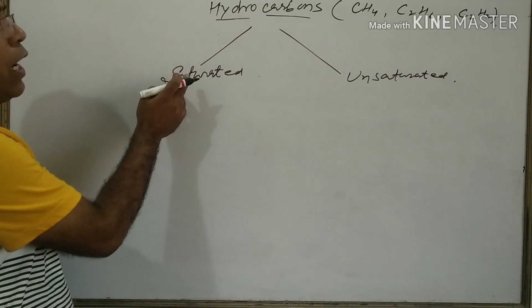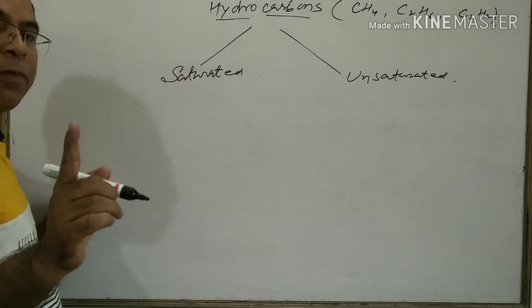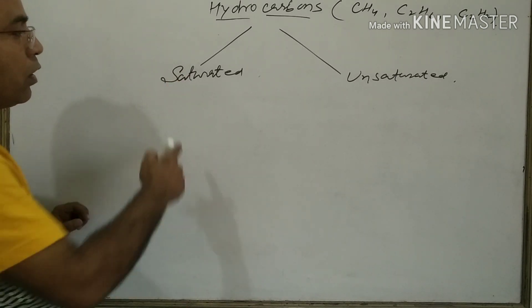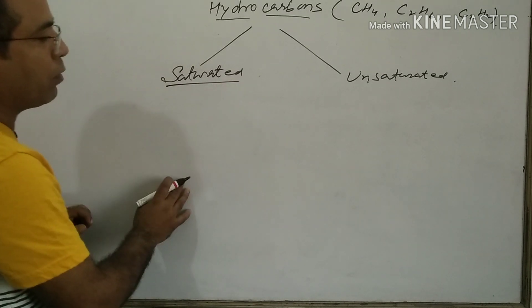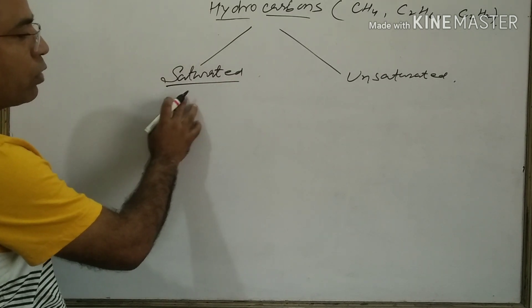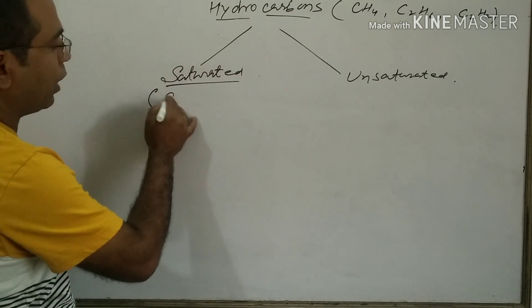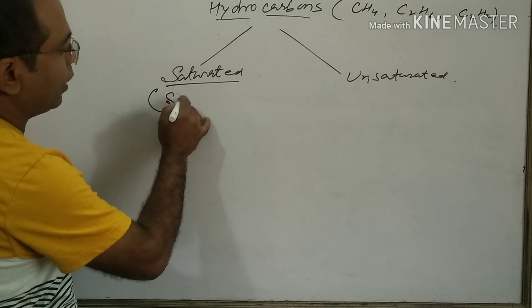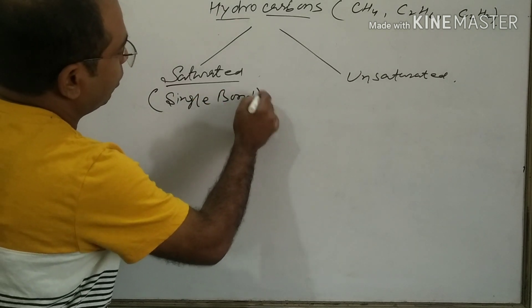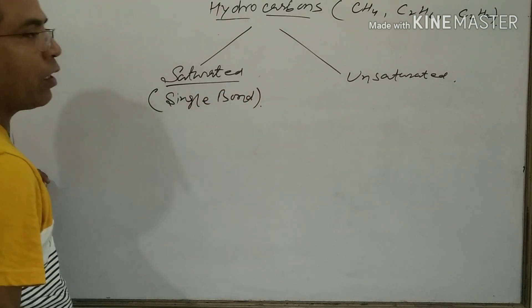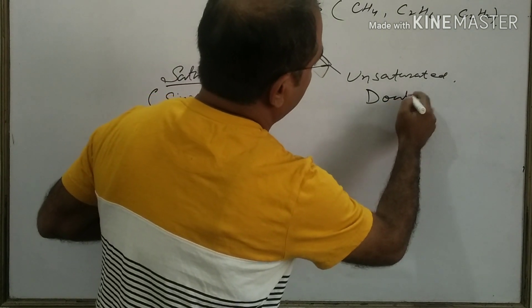A saturated hydrocarbon is formed by sharing a single pair of electrons — it has only single bonds. That is why it is called a saturated hydrocarbon.